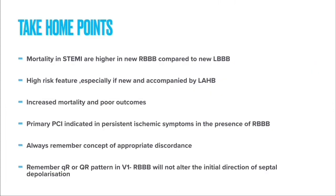Take-home points: mortality in STEMI is higher in new RBBB compared to new LBBB. It is a high-risk feature, especially when new and accompanied by left anterior hemiblock, resulting in increased mortality and poor outcome. Primary PCI is indicated in persistent ischemic symptoms in the presence of right bundle branch block. Always remember the concept of appropriate discordance, and remember that a QR pattern in V1 indicates ischemia, because right bundle branch block will not alter the initial direction of septal depolarization — in RBBB there will always be a positive initial R wave unless there is ischemia.